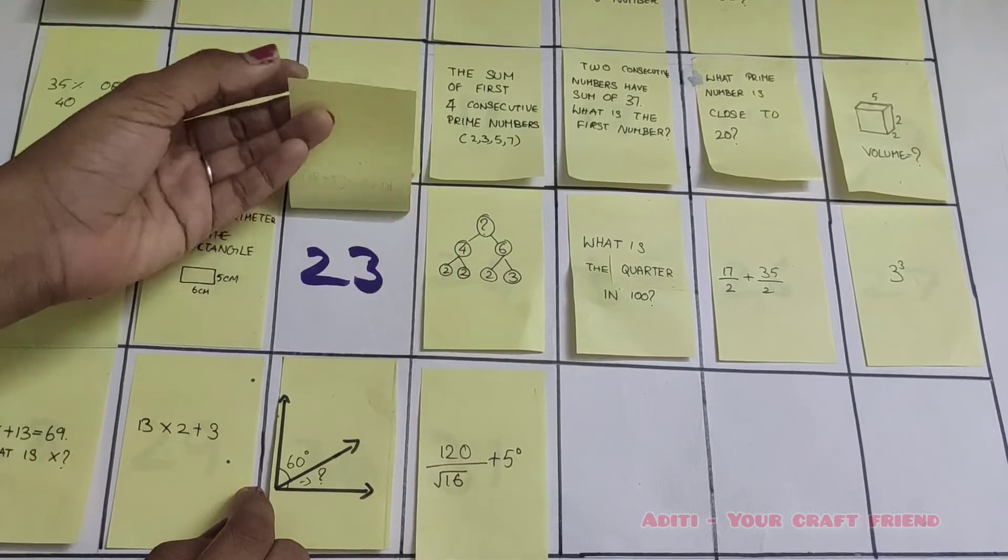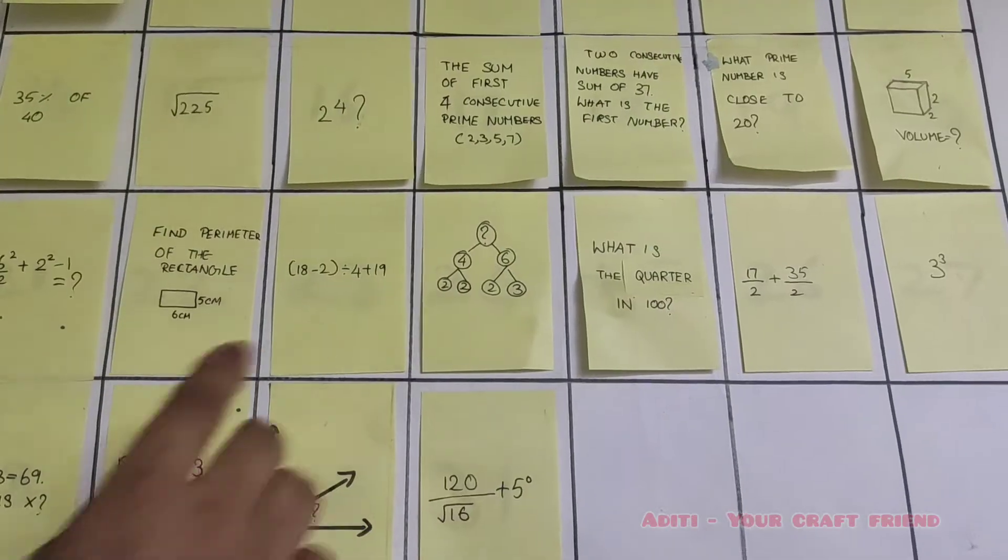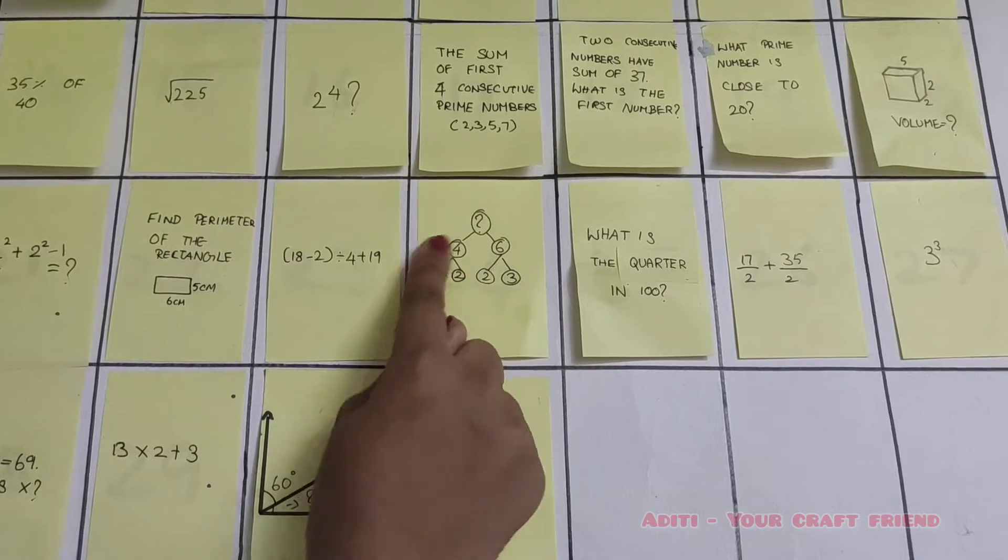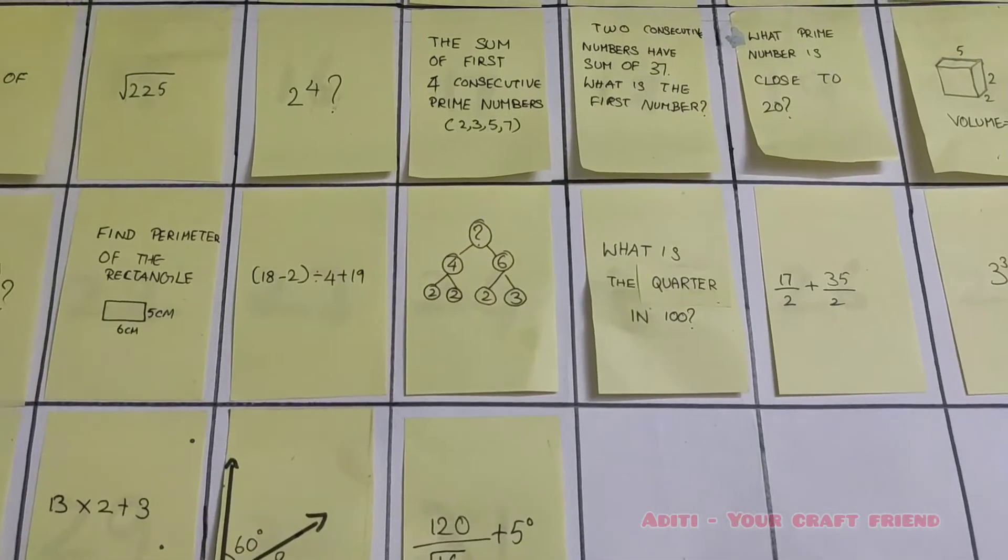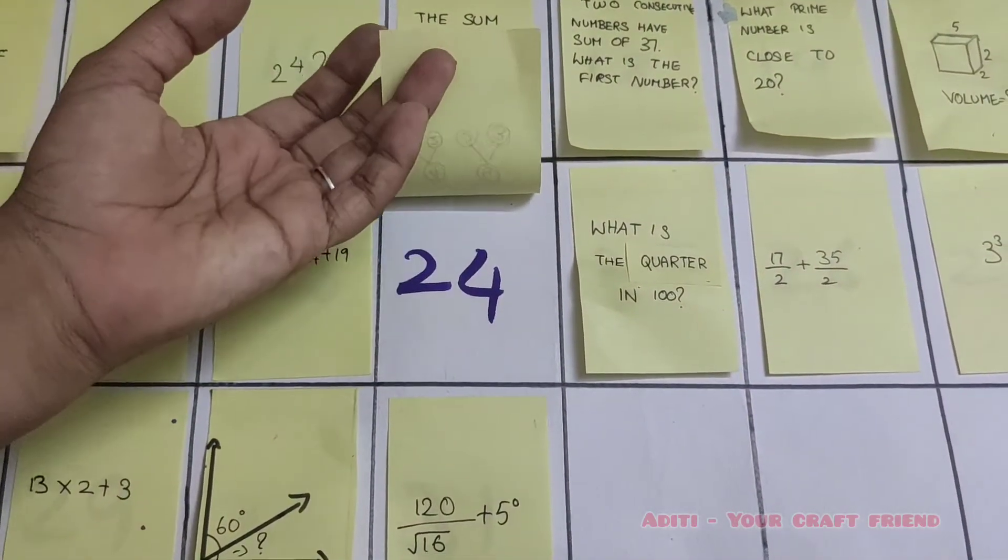Yes, it's 23. What is the missing number in this factor tree? Can you identify it? Yes, it's 24.